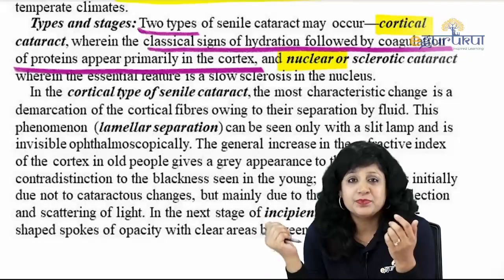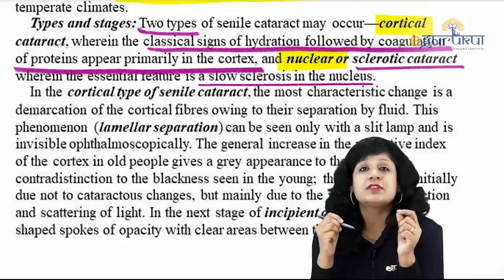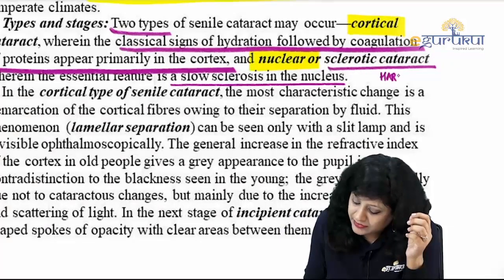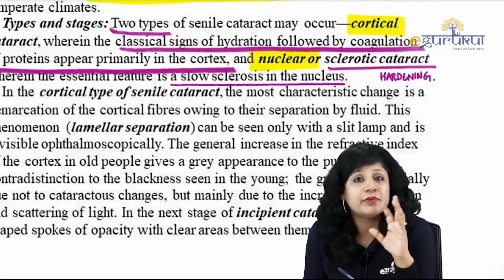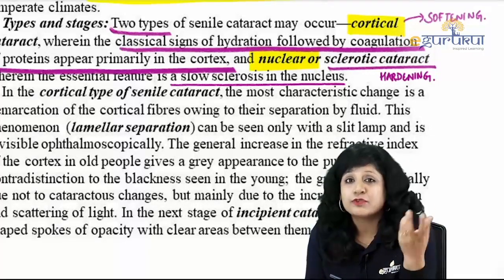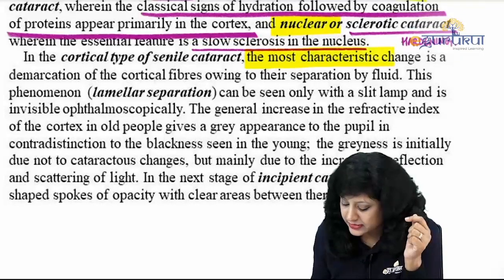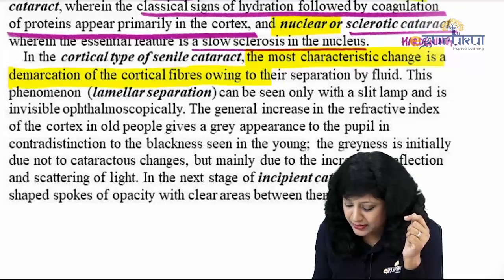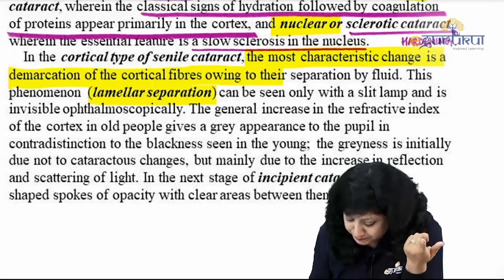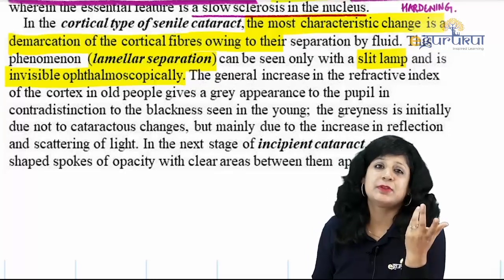Nuclear cataract is a sclerotic cataract — there is hardening of the nucleus. Both cortex and nucleus develop cataract but differently: cortical cataract involves softening while nuclear cataract involves hardening. One is a soft cataract, the other is a hard cataract. The most characteristic change in cortical senile cataract is demarcation of the cortical fibers — lamellar separation — which is the first thing to occur, visible on slit lamp but not ophthalmoscopically.